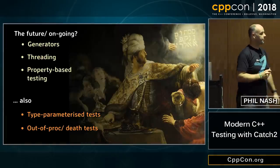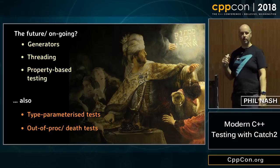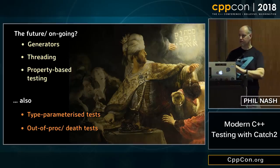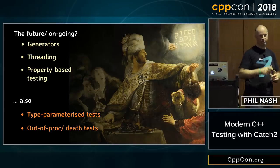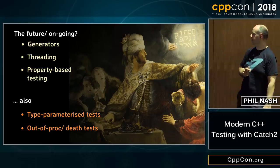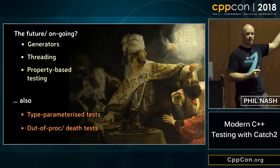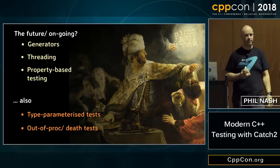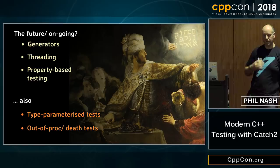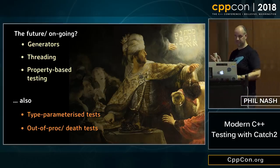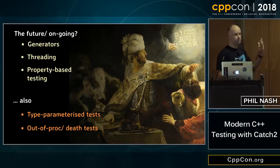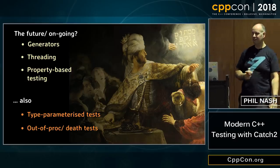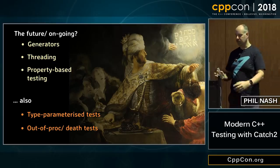So that's generators. If you've been to any of my Catch talks before, you'll know I usually round out on a Future Directions slide, and I'm gradually chipping away at them. You can see we're already starting to do generators — there's still some more work to do. The other big one that I've been waiting for C++11 to do, so now I've got no excuse, is threading support, which was really hard before C++11 but is almost trivial now. There's some work underway to do that.